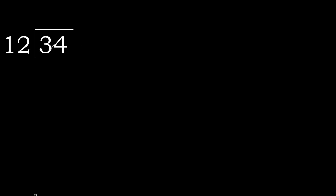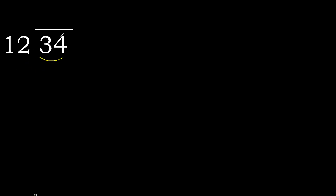34 divided by 12. 3 is less, therefore next. 34 is not less, therefore with 34 — 12 multiplied by which number is nearest to 34 but not greater?